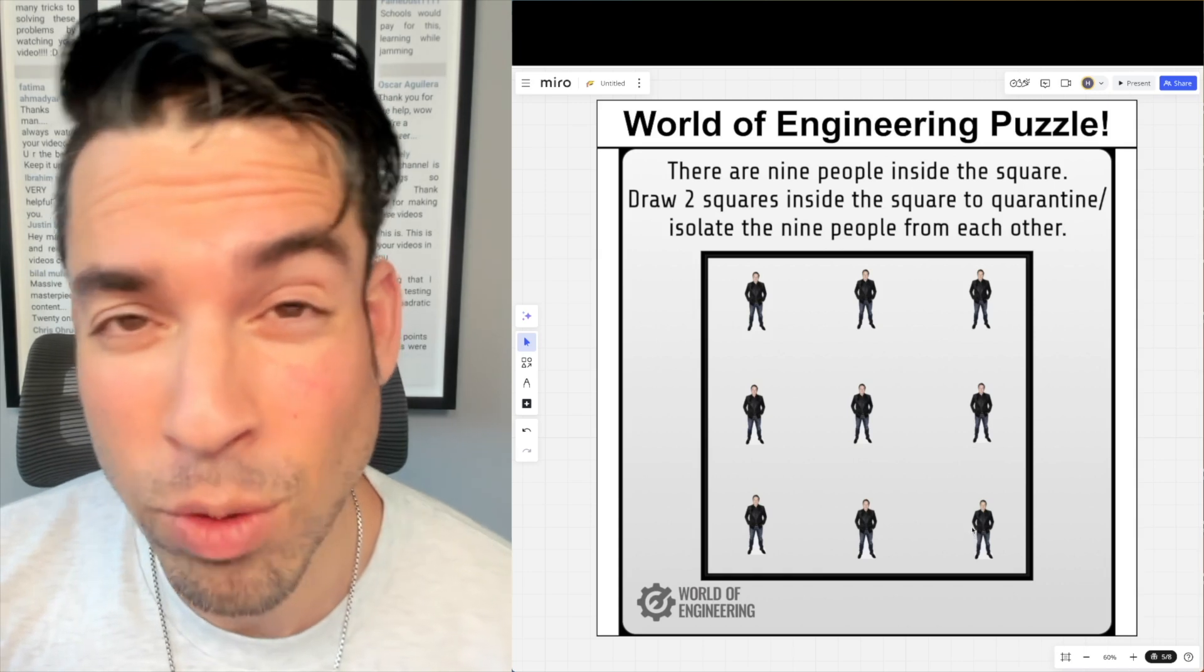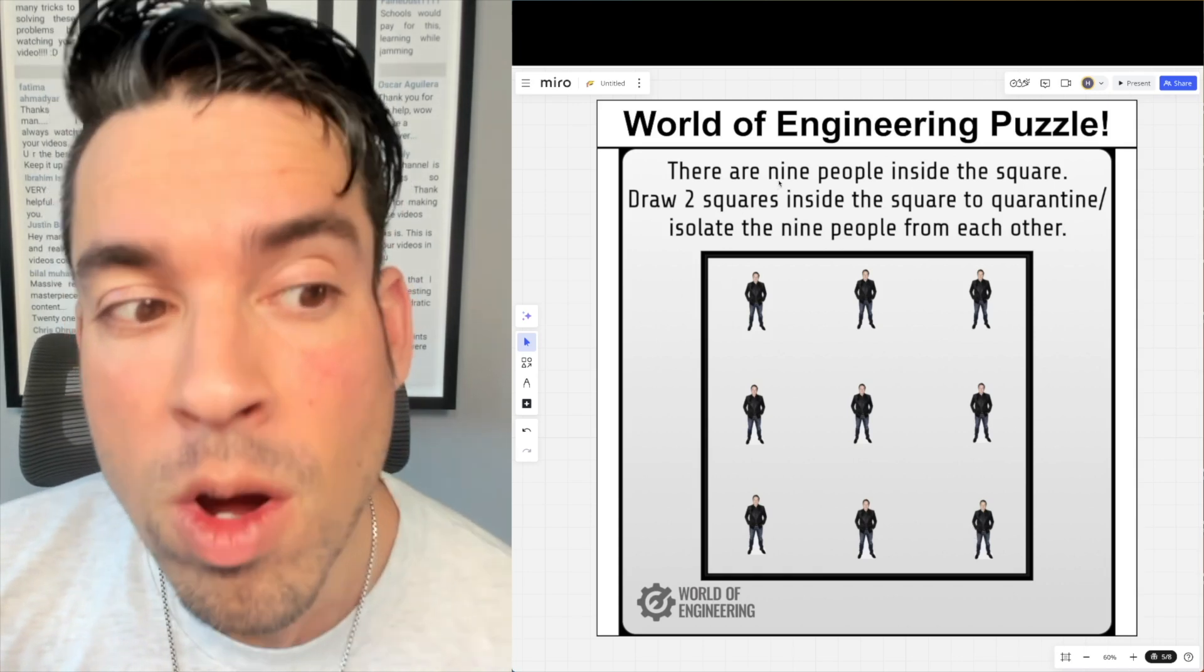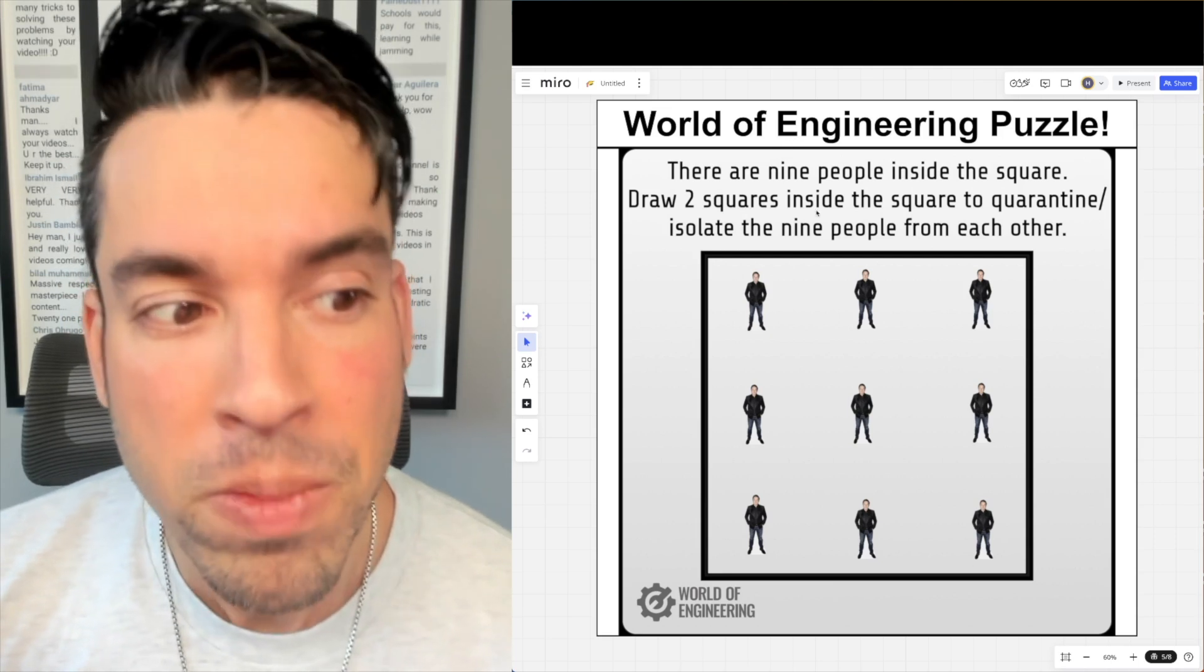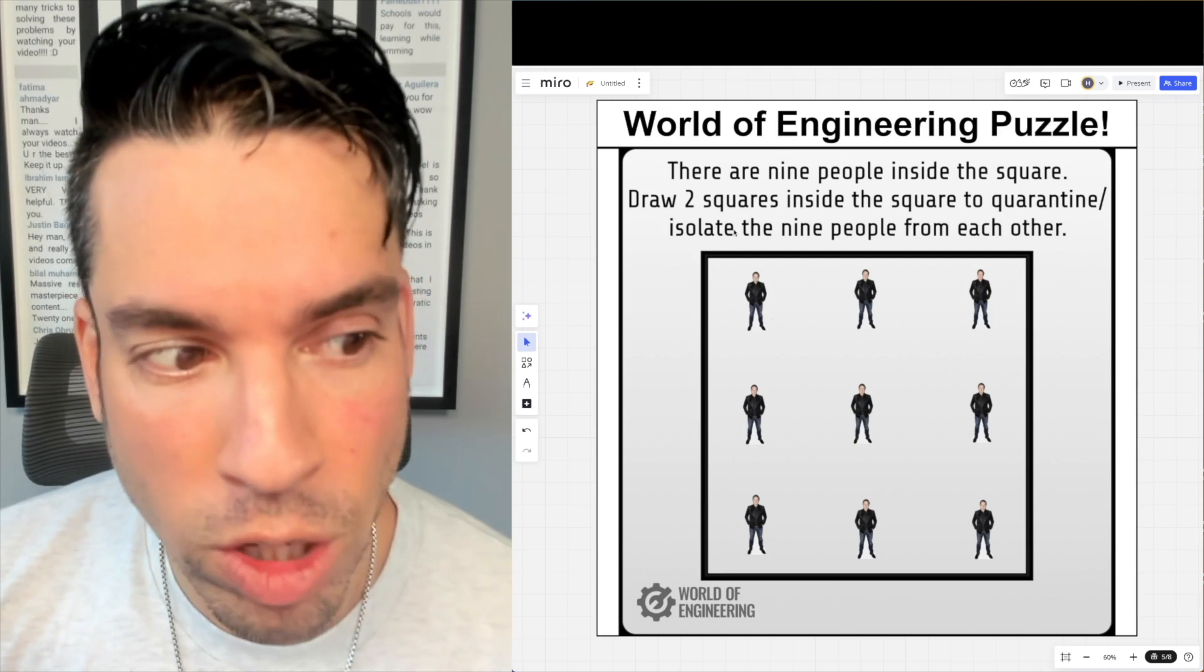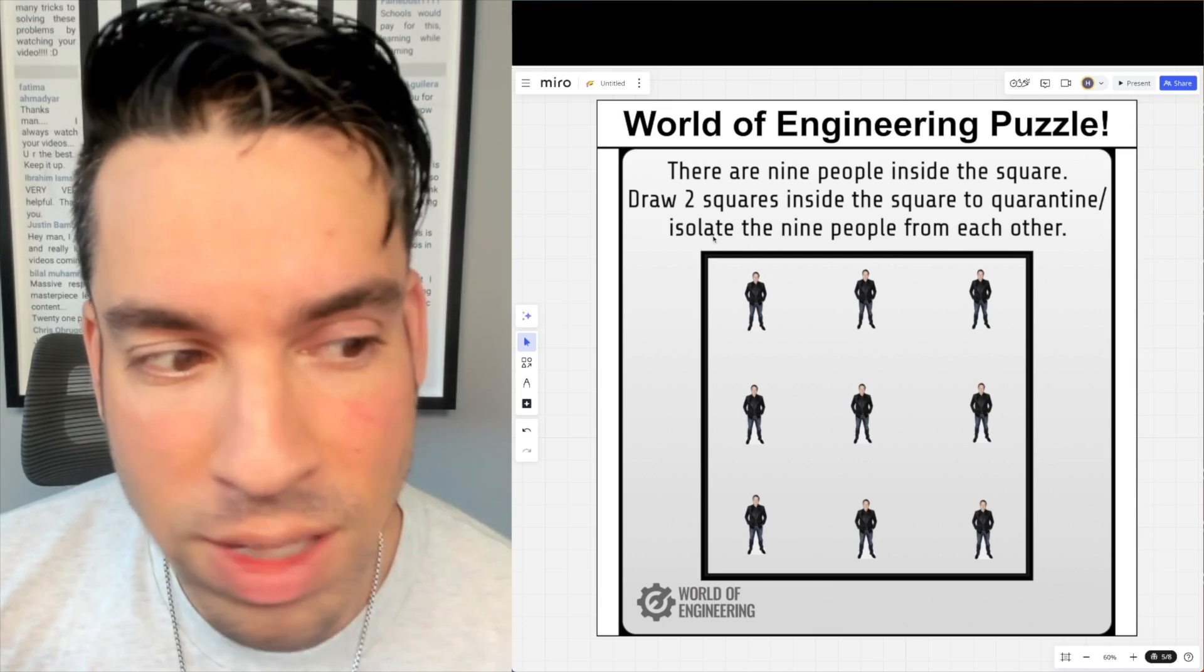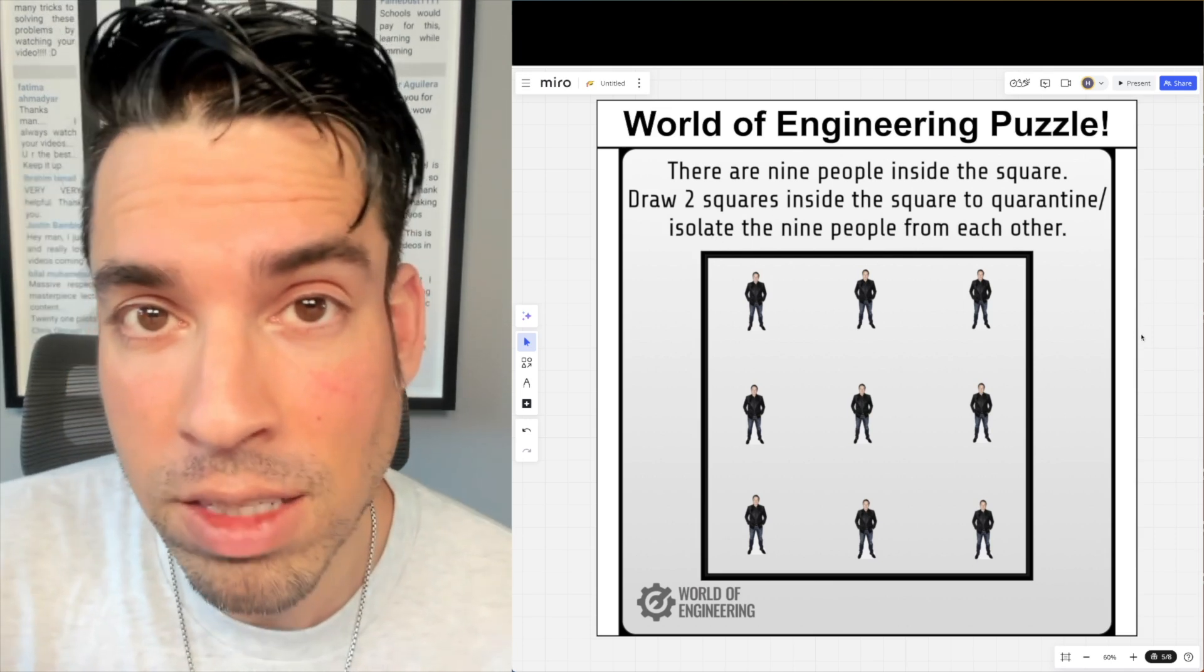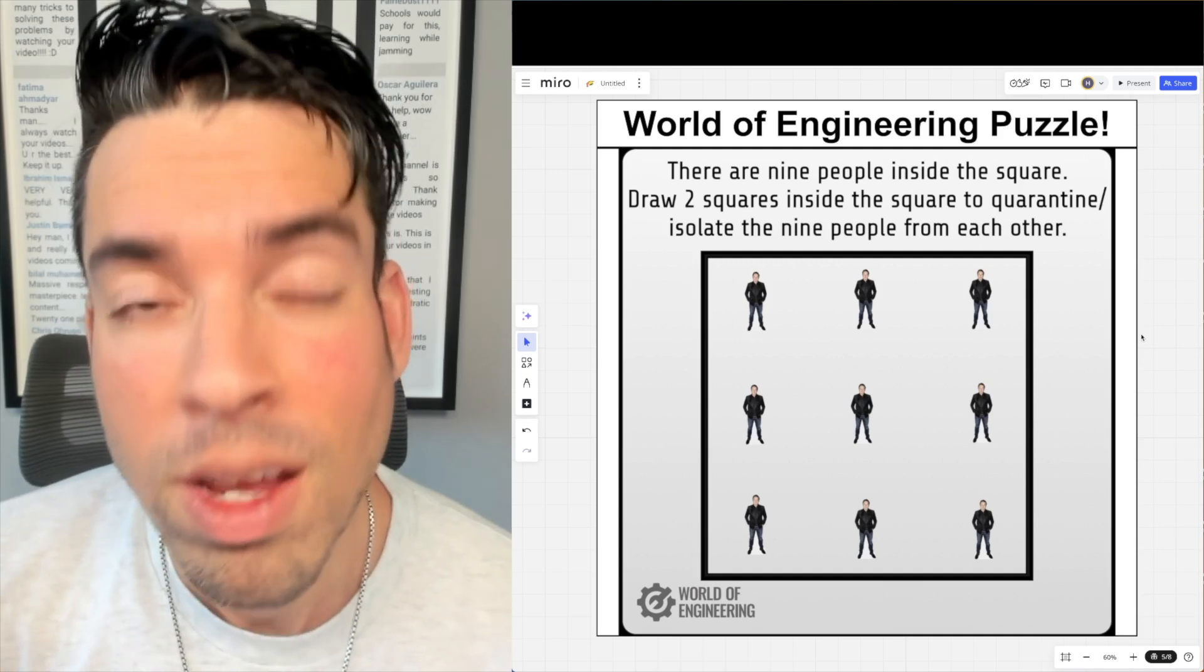What's up everybody and welcome back to another math puzzle. In this one, the question is as follows and it comes from World of Engineering: There are nine people inside the square. Draw two squares inside the square to quarantine/isolate the nine people from each other, so each person has to be within its own zone.